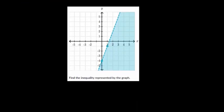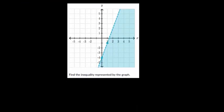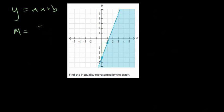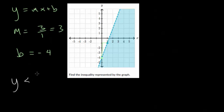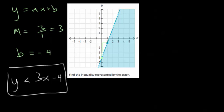Let's do another one. We want y equals mx plus b first. This is a dashed line and we're shading under the line, so it's going to be less than. Our slope looks like up 3 over 1, so the slope is 3. Our y-intercept crosses the y-axis at negative 4. So we have y is less than 3x minus 4. That should be the answer for this one.